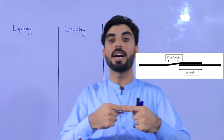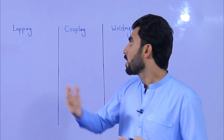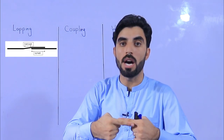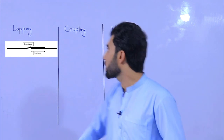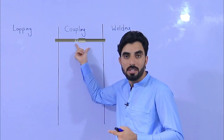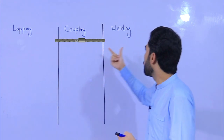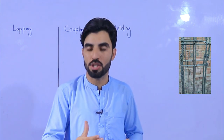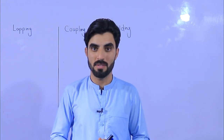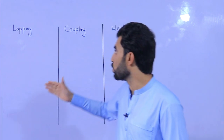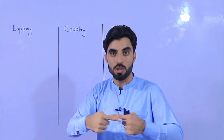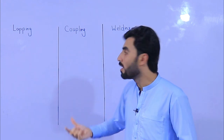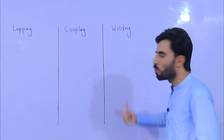We can overlap steel with three methods. The first one is lapping, meaning one steel bar overlaps with another. The second is the coupling method, and the third is welding. Now, which one is the best option — overlapping, coupler method, or welding — to get the full length for steel reinforcement? This is the topic for today.